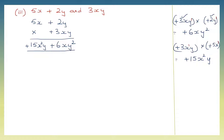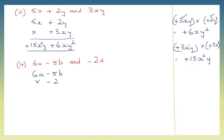So this is my answer. We'll move on to question 4. Let's multiply 6a minus 5b by minus 2a.